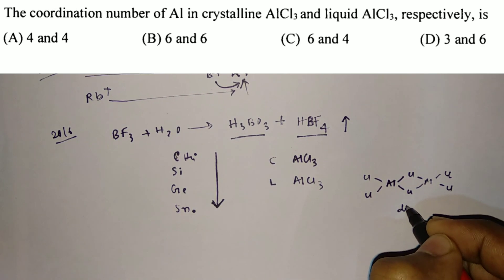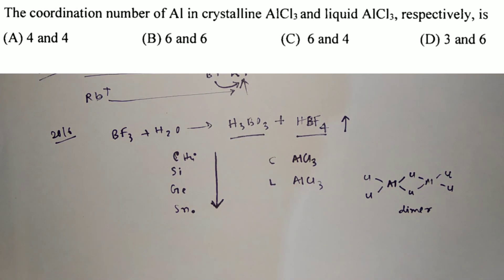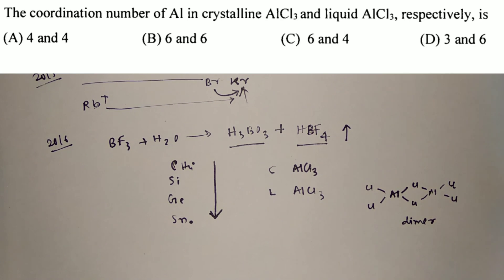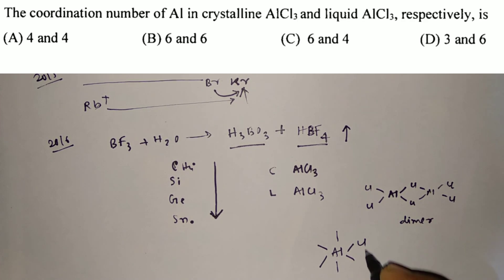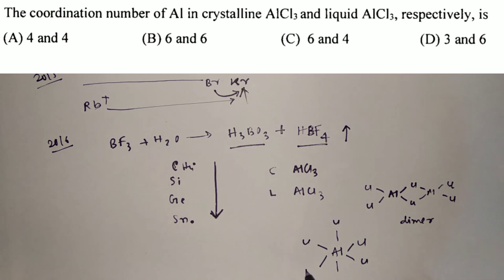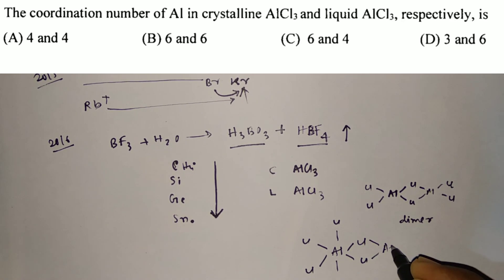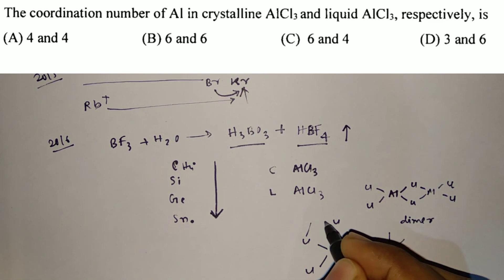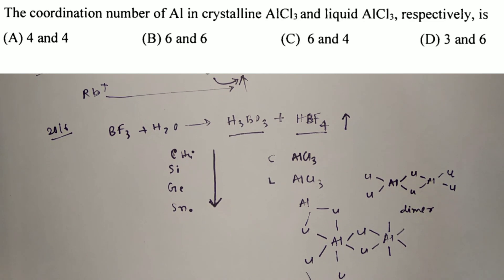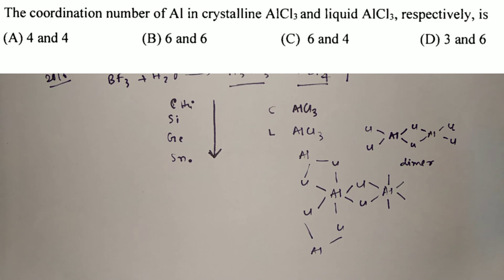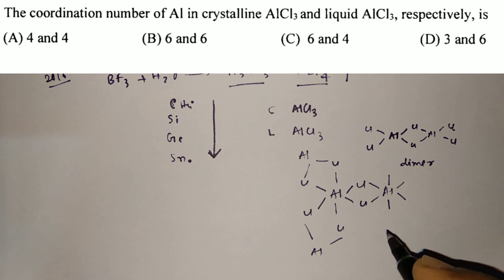Liquid AlCl3 forms a dimer — Al2Cl6. In the dimer structure, one aluminium is bonded to four chlorine atoms, giving a coordination number of four. In solid crystalline AlCl3, it forms a six-membered layered structure where each aluminium is connected to six chlorine atoms, so the coordination number is six.